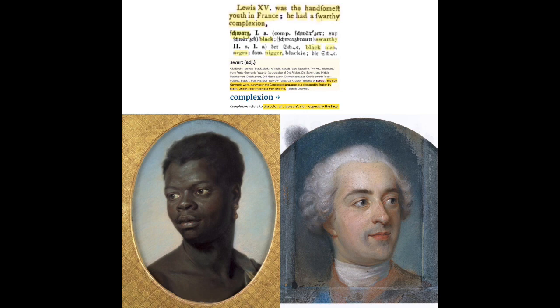Louis the 15th had a swarthy complexion and prominent nose — typically good Bourbon — and that word Bourbon comes from the word Berber, meaning people of dark skin descent. Berbers, Barbary, Berber — it's all the same thing: dark-skinned people. Louis the 15th also had a daughter who was not acknowledged.